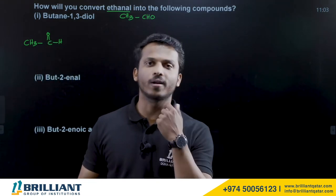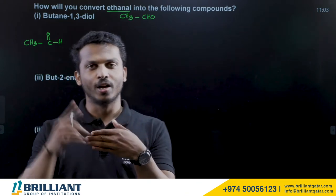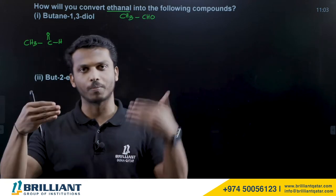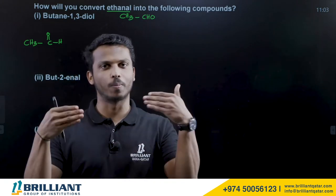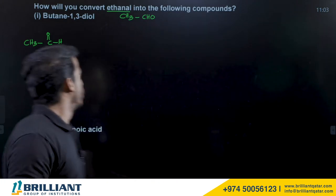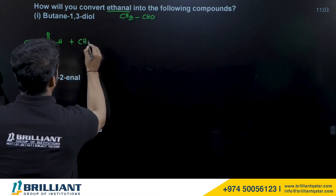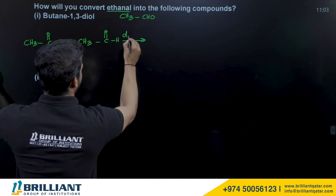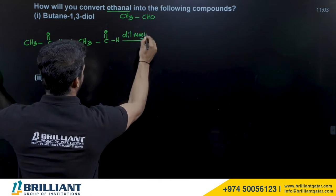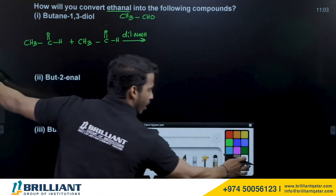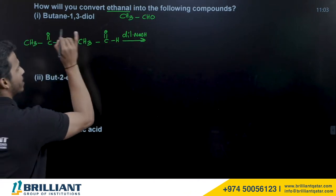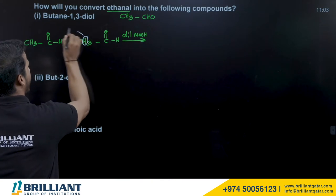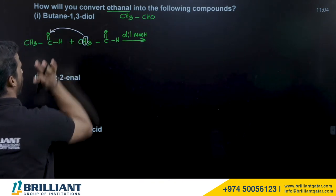During aldol condensation, we mix two of the same aldehyde. Our aldehyde is ethanol. Eth plus eth gives butane — 2 plus 2 equals 4. So let us mix ethanol with one more ethanol and perform aldol condensation with dilute base NaOH.